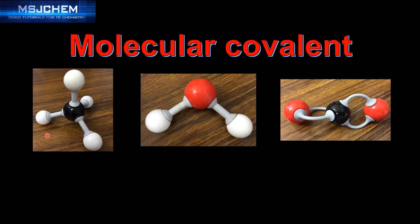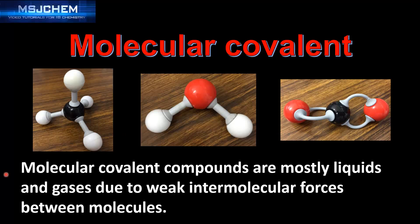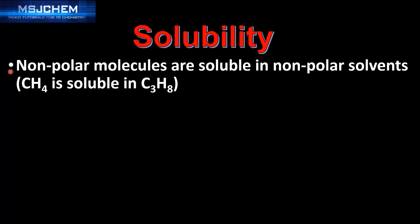Here are some examples of molecules that have molecular covalent structures. They form discrete molecules such as CH4 methane, H2O water, and CO2 carbon dioxide. Molecular covalent compounds are mostly liquids and gases due to the weak intermolecular forces between the molecules.